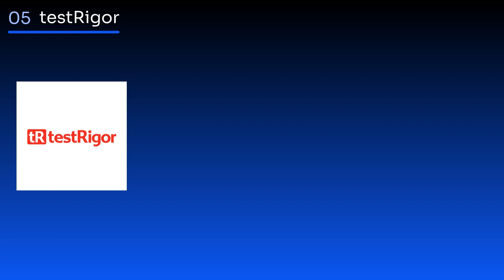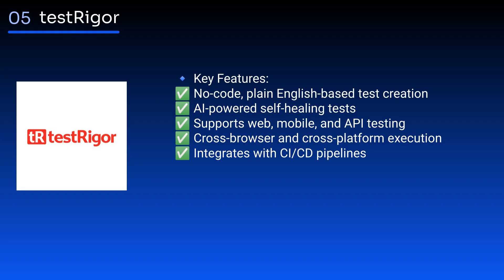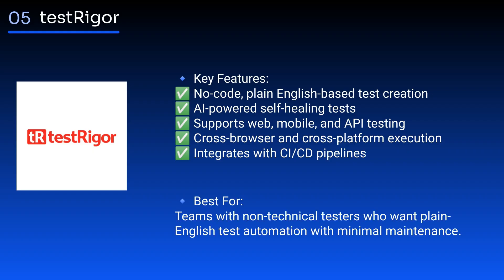TestRigor is a no-code, AI-driven test automation platform that enables non-technical users to create automated tests using plain English. Key features: no-code plain English-based test creation, AI-powered self-healing tests, supports web, mobile, and API testing, cross-browser and cross-platform execution, integrates with CI/CD pipelines. Best for teams with non-technical testers who want plain English test automation with minimal maintenance.